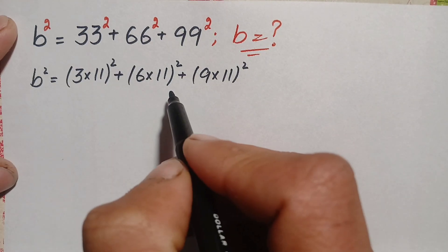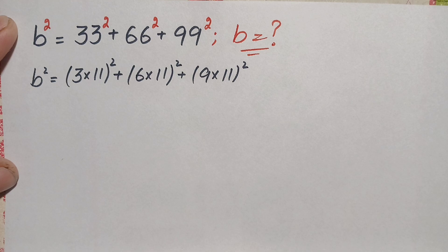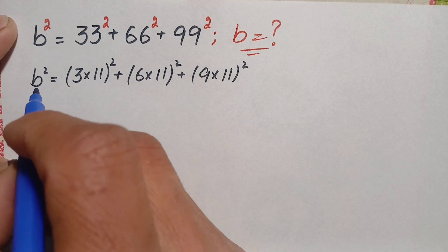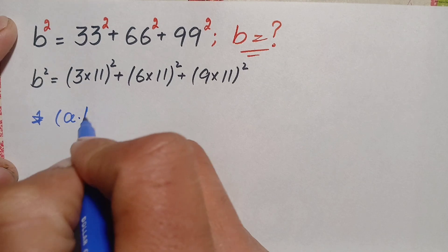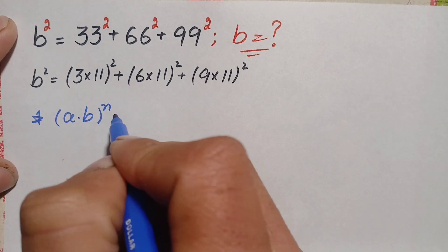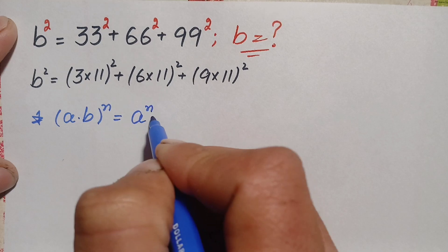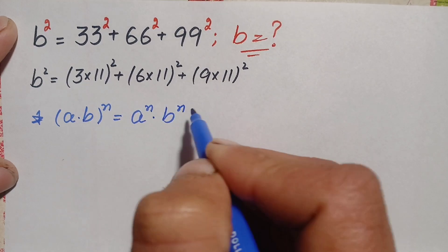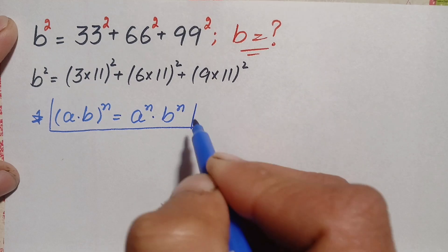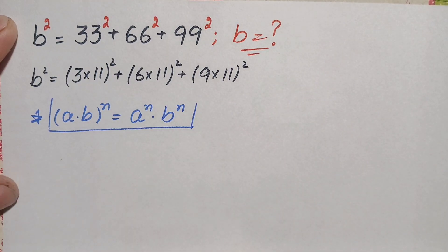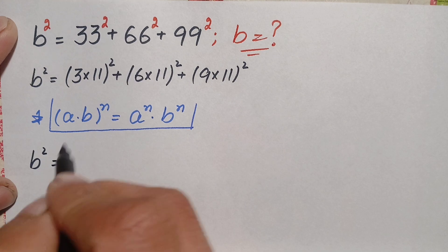Now, for these three terms we will use the exponential identity: (a × b)ⁿ = aⁿ × bⁿ. Using this identity on the right-hand side, b² becomes 3² × 11² + 6² × 11² + 9² × 11².